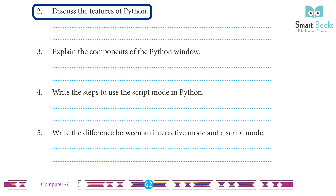Features of Python: A. Python is freely available on the internet and can be easily downloaded from www.python.org. B. Python is portable and platform-independent, meaning it can run on various operating systems and hardware platforms.